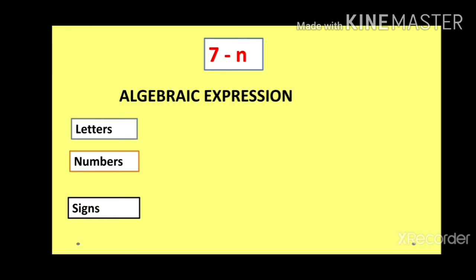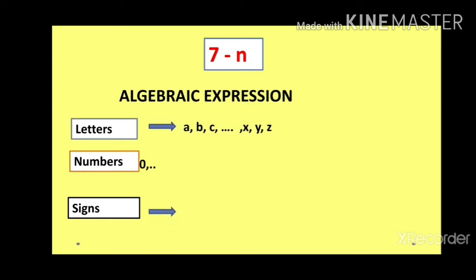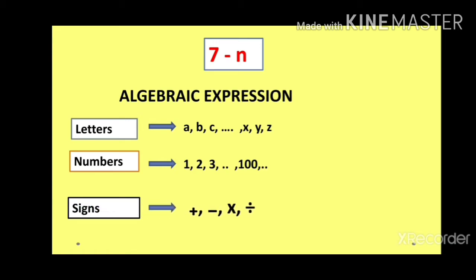An algebraic expression contains letters, numbers, and signs. The letters can be a to z — any letter. Numbers are uncountable, starting from 1 or anything; they can be integers also. Signs include plus, minus, multiplication, division — anything.